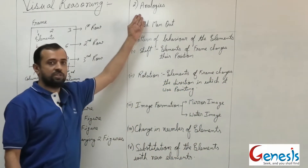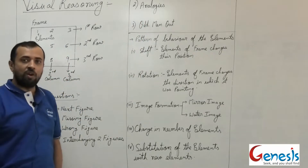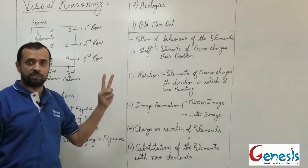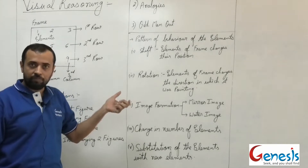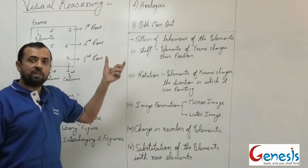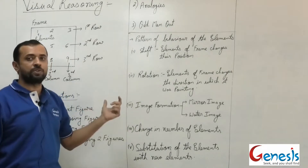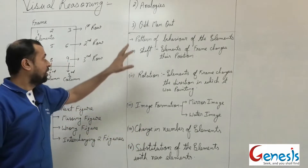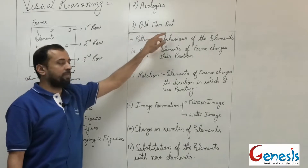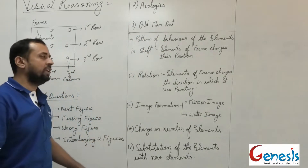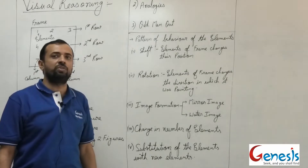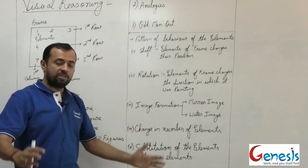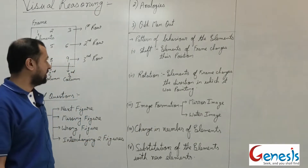The next set of questions covers analogies. In an analogy question, two frames are given that are logically connected. You decode the logic of those two frames and find the set of two options that follows the same logic. The third broad type is odd man out, where a series of figures is given and you need to find which one is the odd figure in the series.